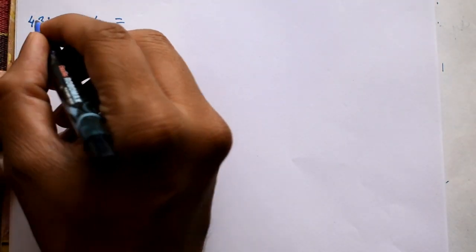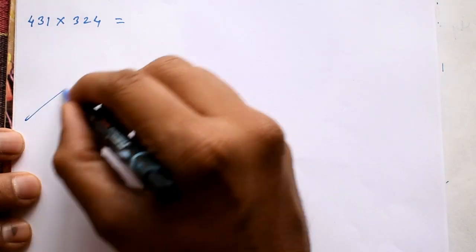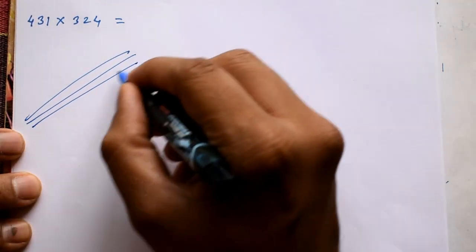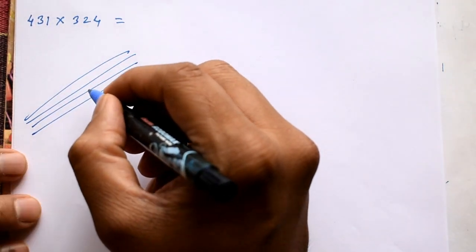First number is 431. First I write 4 lines. 1, 2, 3, 4 lines. I draw first 4 lines.